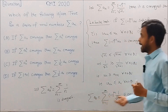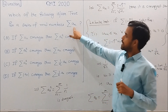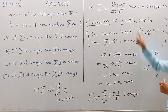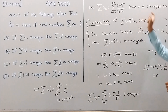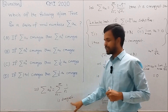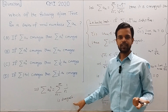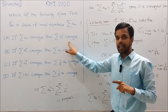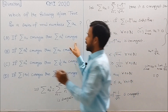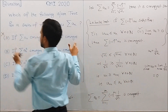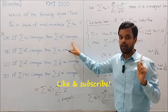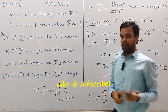So we see that there exists a series of real numbers An which is convergent, but the series of its squares, An squared, is divergent. Therefore the statement in A is not always true, so Statement A is discarded.